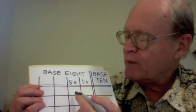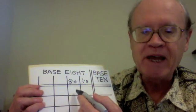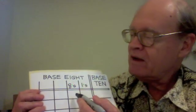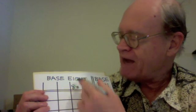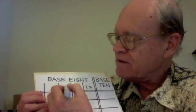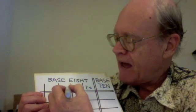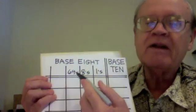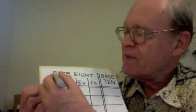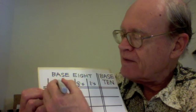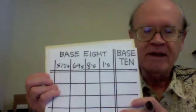And whatever numeral we put in this place would tell us not how many tens we have, but how many eights we have. The next place would be 8 times 8, which is 64, the sixty-fours place. And to the left of that, 64 times 8 is 512. And so we would have the five hundred twelves place. And so on indefinitely.